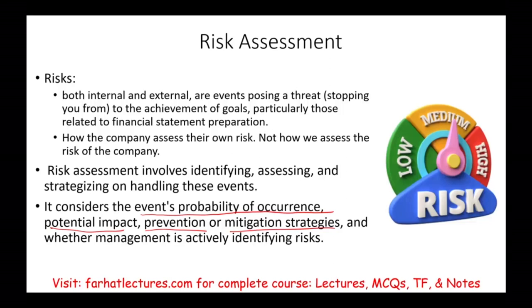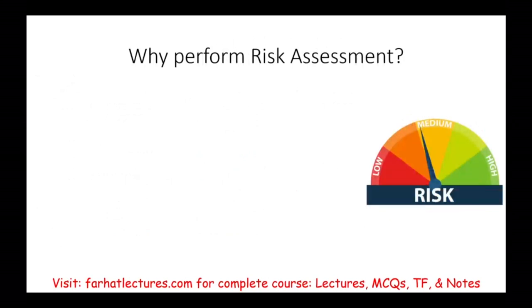As part of their internal control framework, companies identify those risks, assess them, and strategize how to handle them. Management actively identifies risks first, then assesses the likelihood of occurrence, and finally determines what to do to either prevent them or handle them if they occur. Companies perform risk assessment to protect themselves.